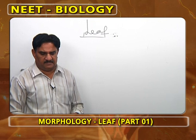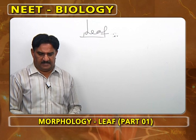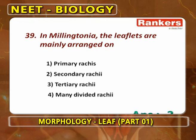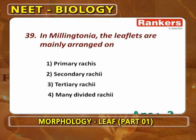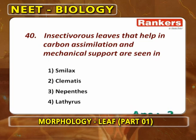Leaflets arranged on both sides of primary rachis: paripinnate and imparipinnate. On secondary rachis: Delonix and Cassia. On many divided rachises: Coriandrum sativum — a special feature of the Apiaceae (Umbelliferae) family.